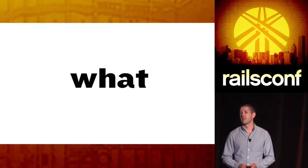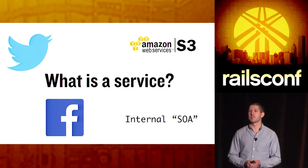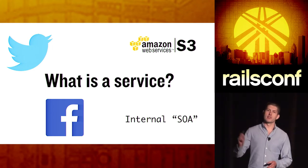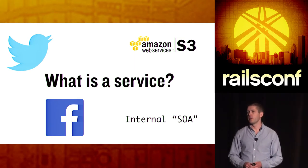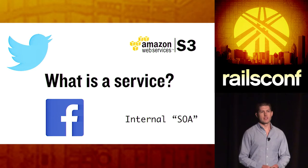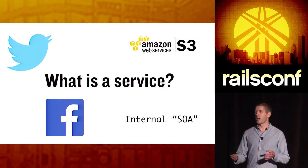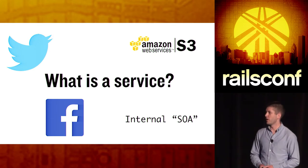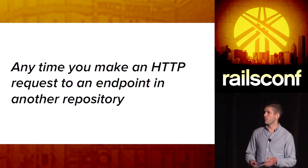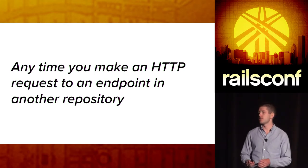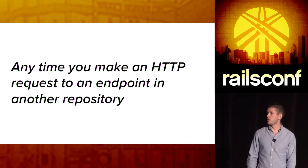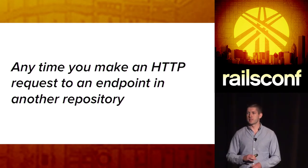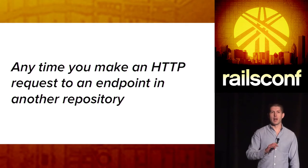So first we're going to talk about the what. We have to ask ourselves, what is a service? I break it down into two main categories. First, we have external services like the Twitter API, Facebook's API, or Amazon Web Services. The other category is internal software-oriented architecture — a buzzword we all know and love. For the purpose of this talk, it means any time you're making an HTTP request to an endpoint in another repository — basically any network request you're making outside of your application.